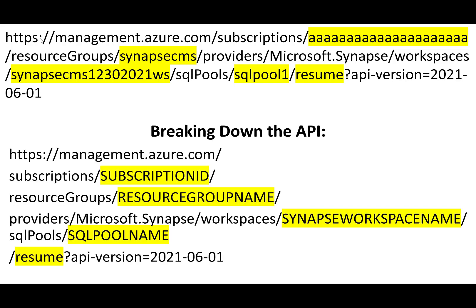Breaking down that API: there's the prefix, then add your subscription ID, add your resource group name, add your Synapse workspace name, add the SQL pool name, and then whether or not you want to resume or pause. There are also some different versions of the API, and at the time I'm making this video, the version for 2021-06-01 worked perfectly fine for me.